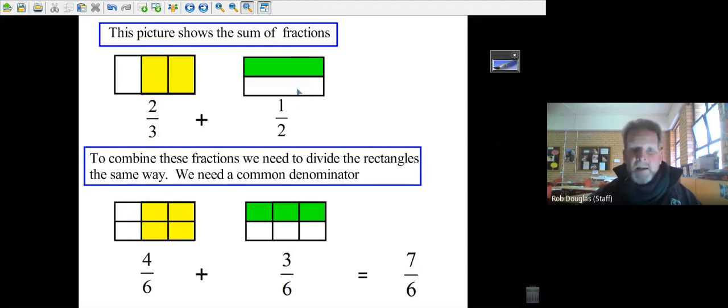The whole thing is now in six parts. You can see that two over three is really the same as four out of six, and one-half is the same as three out of six.